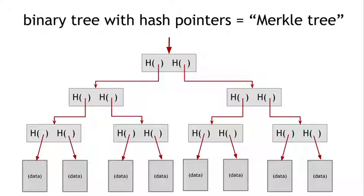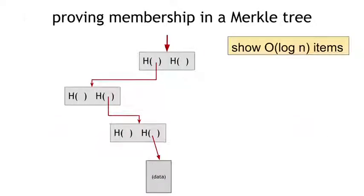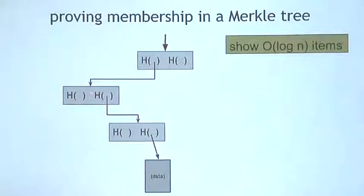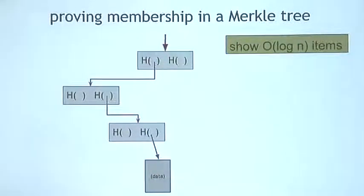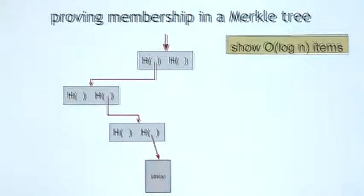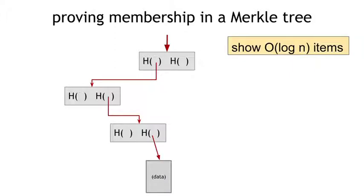Another nice feature of Merkle trees is efficient membership proofs. If someone wants to prove to us that a particular data block is a member of the Merkle tree, all they need to show us is a path of data along the tree. They show us the sibling block and we verify the hash matches; then the next block up and we verify its hash; then the next, verifying the hash pointer matches all the way up to the root. Just by verifying hashes up to the root, we can confirm the data block was in the Merkle tree. This takes about log n items to be shown and log n time to verify — so even with a very large number of data blocks, we can prove membership in relatively short time.